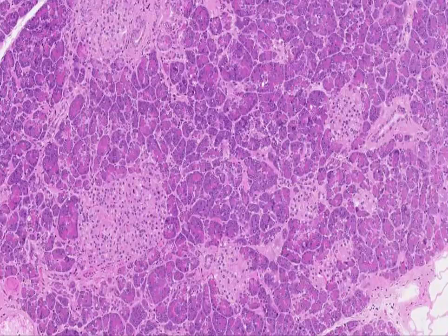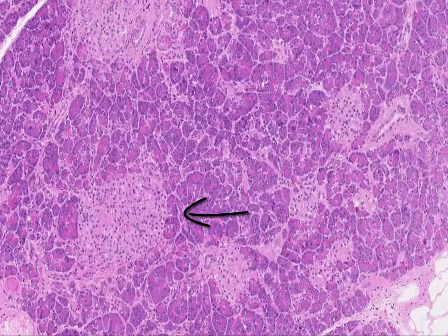The majority of the pancreas is composed of acinar cells, which comprise the exocrine pancreas. The endocrine functioning islets of Langerhans confirm that we are looking at the pancreas and not the parotid, which lacks endocrine function.